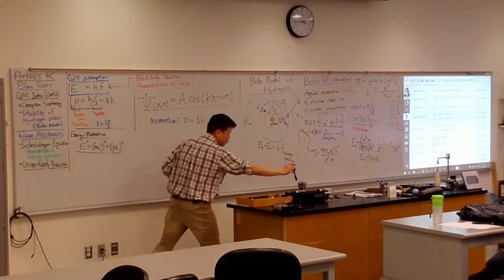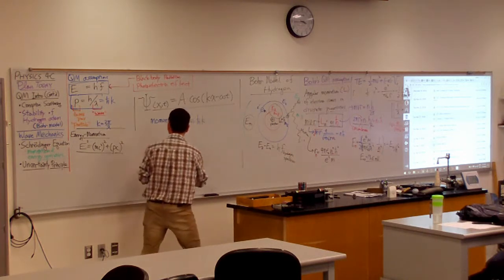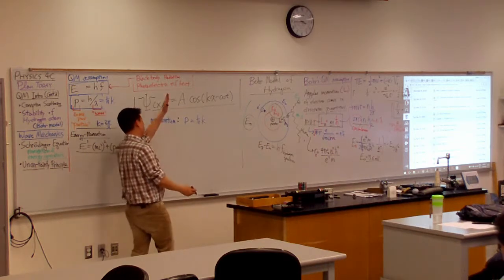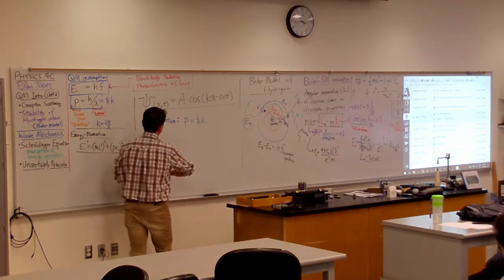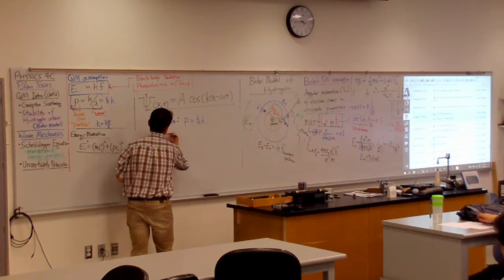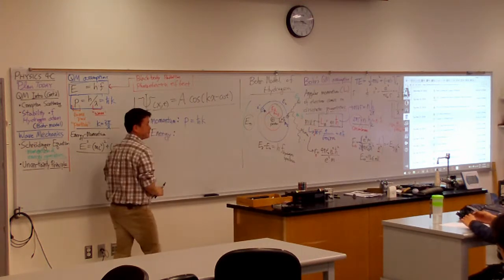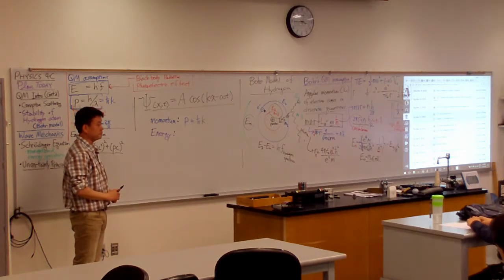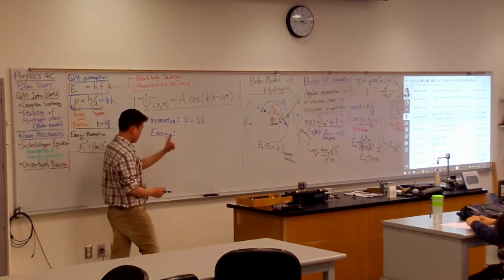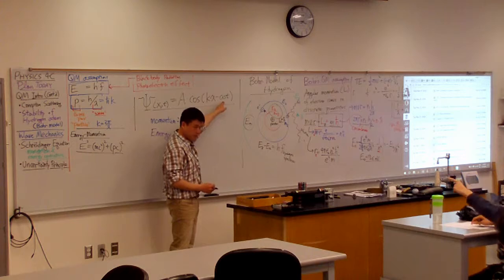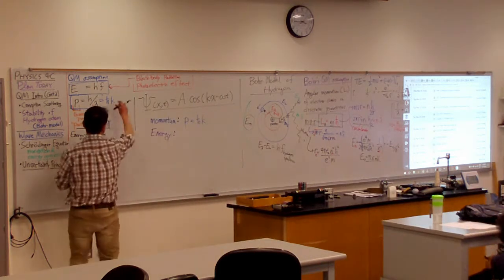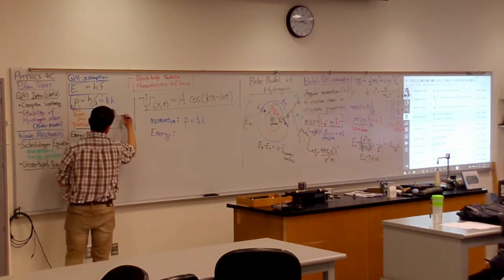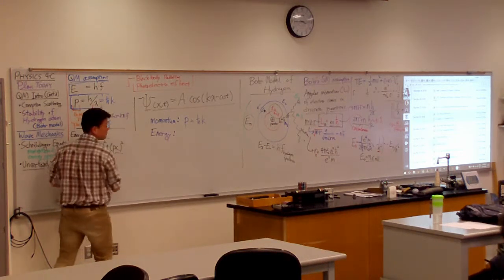All right. Can we somehow measure energy of this wave, of the electron, which is represented by this wave function? So, if we wanted to measure its energy, how would we do that? Going to be related to the angular frequency, right? So, let me rewrite this version in a similar way. So, you remember that omega is equal to 2 pi f.